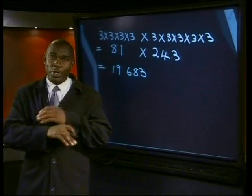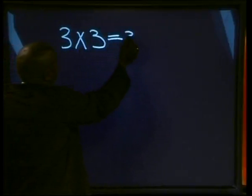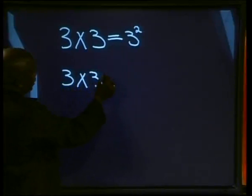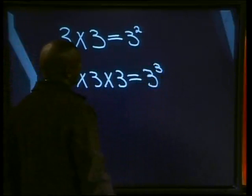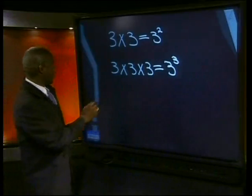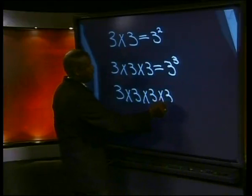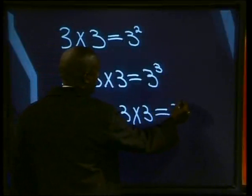It is time to look for a shorter way to write all the repeated multiplication. Let me show you the correct mathematical way. 3 times 3 is 3 to the power of 2. 3 times 3 times 3 is 3 to the power of 3. Can you carry on? How can you write 3 times 3 times 3 times 3 in a short way? It is 3 to the power of 4.